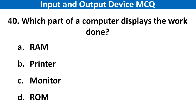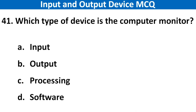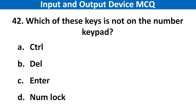Next question: Which part of a computer displays the work done? Right answer is option C: Monitor. Next question: Which type of device is a computer monitor? Right answer is option B: Output. Next question: Which of these keys is not on the number keypad? Right answer is option A: Control.